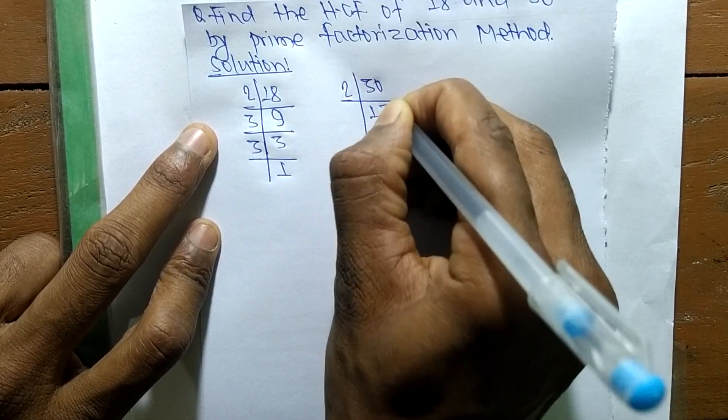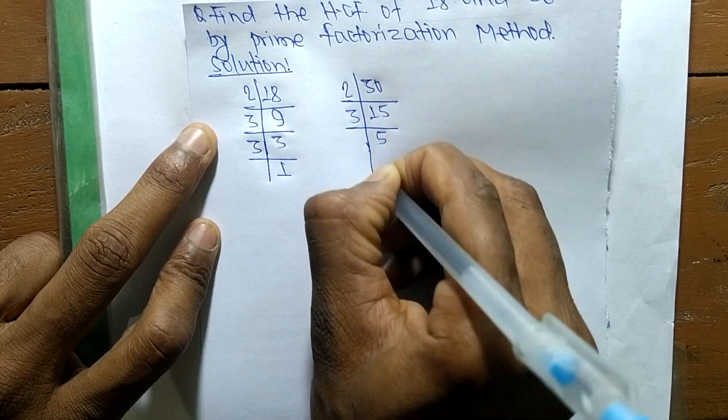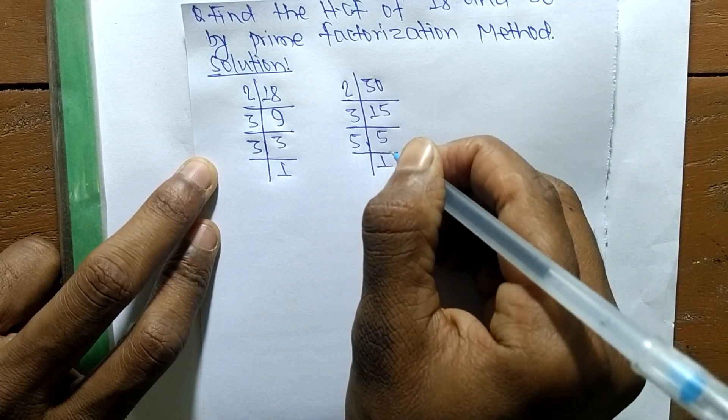In the same way, the prime factors of 30 are: 2 times 15 equals 30, 3 times 5 equals 15, and 5 times 1 equals 5.